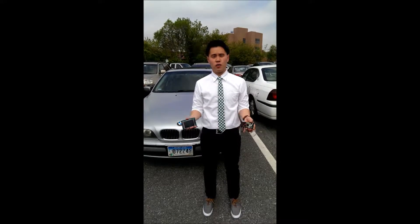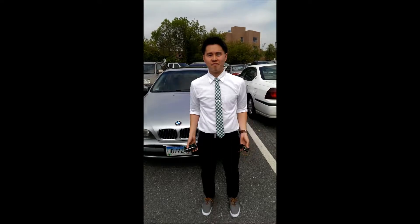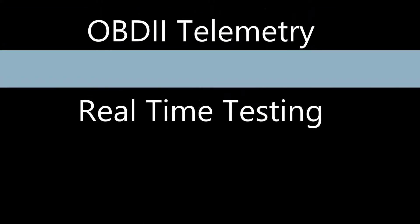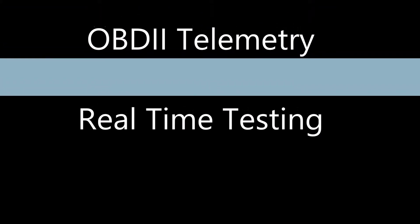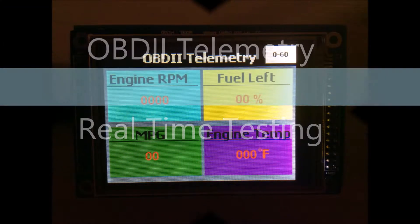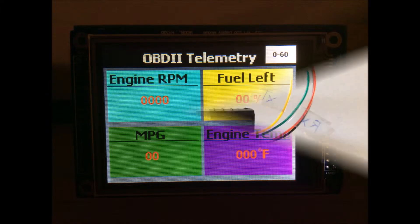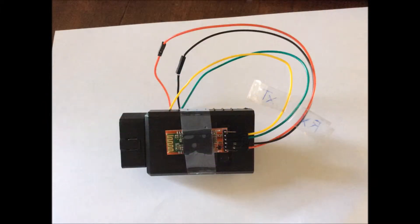For example, we have an application here that will allow you to log your 0-60 time. To demonstrate this, we are going to show you the device working in real-time. Hi, I am Tony, the other co-creator of this OBD2 telemetry system, and I am going to walk you through the basic functionality of the system itself.